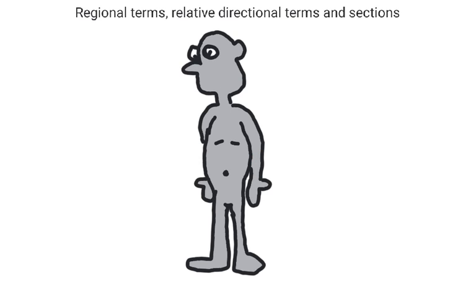The relative directional terms refer to two parts in the body, describing how one is located relative to the other. For instance, ventral means that one thing is closer to the front than the other, but for relative directional terms there must always be two things.